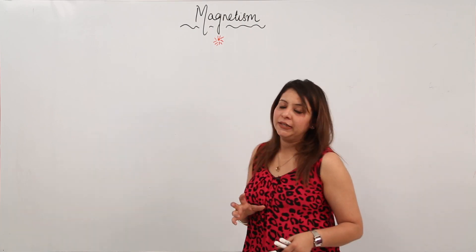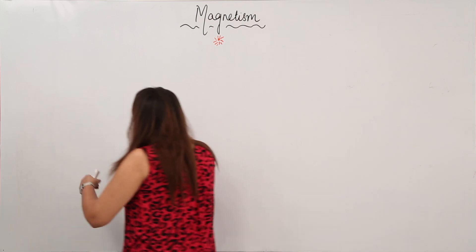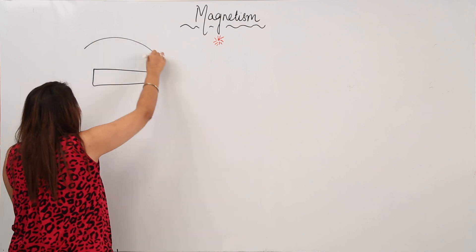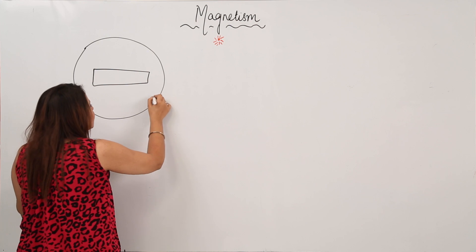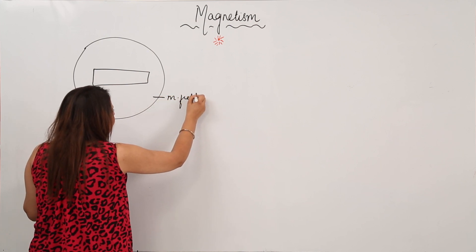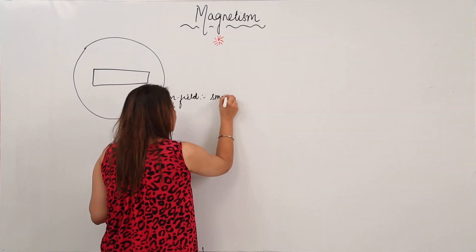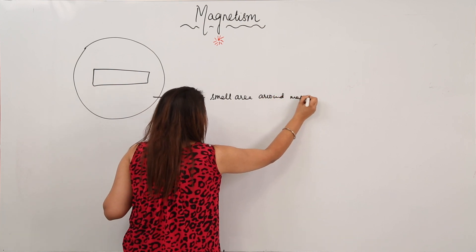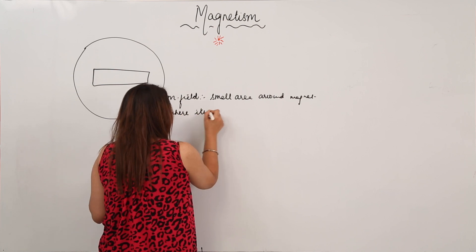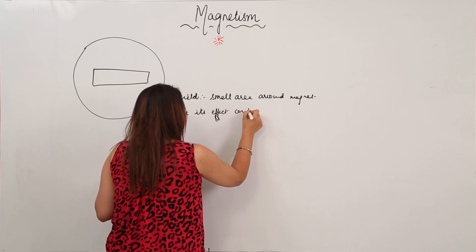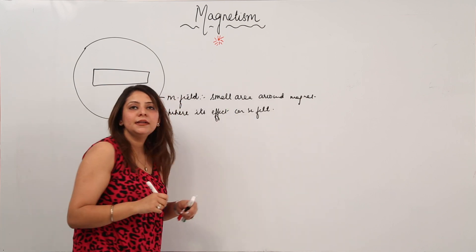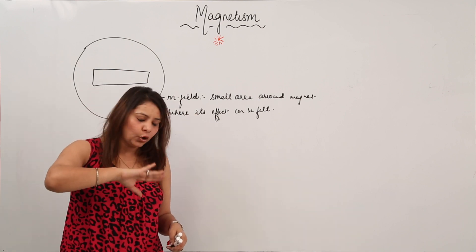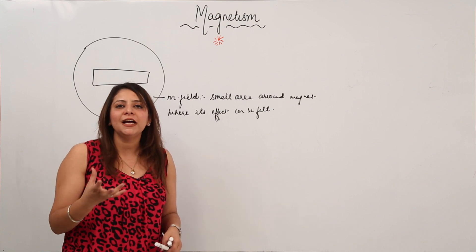We are going to start with a magnetic field. Whenever you have a magnet, a small area is developed around it where its effect can be felt, and that is called the magnetic field. This is what magnetic field is. Since you cannot see this area — it is imaginary, or rather already present but not visible — you cannot say exactly to what extent the field extends around a magnet.